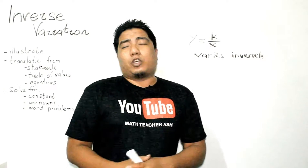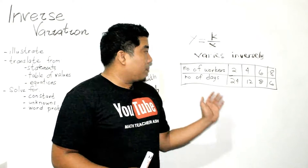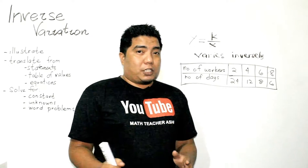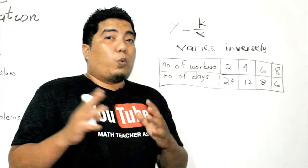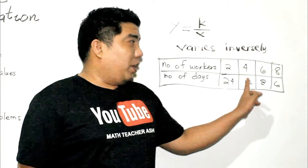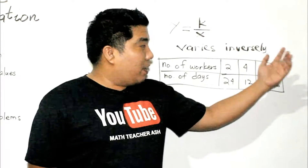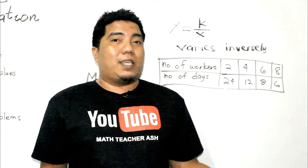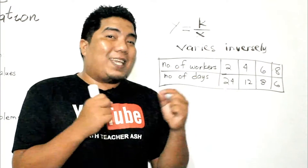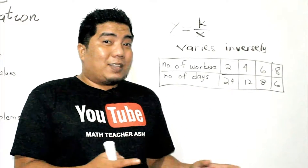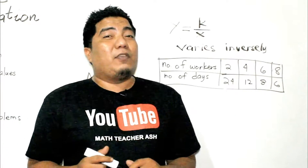How do we translate a table of values? We have a table showing the number of workers and the number of days to finish a job. If there are 2 workers, they finish in 24 days; 4 workers finish in 12 days; 6 workers in 8 days; and 8 workers in 6 days. As the number of workers increases, the number of days decreases — this is an example of inverse variation.